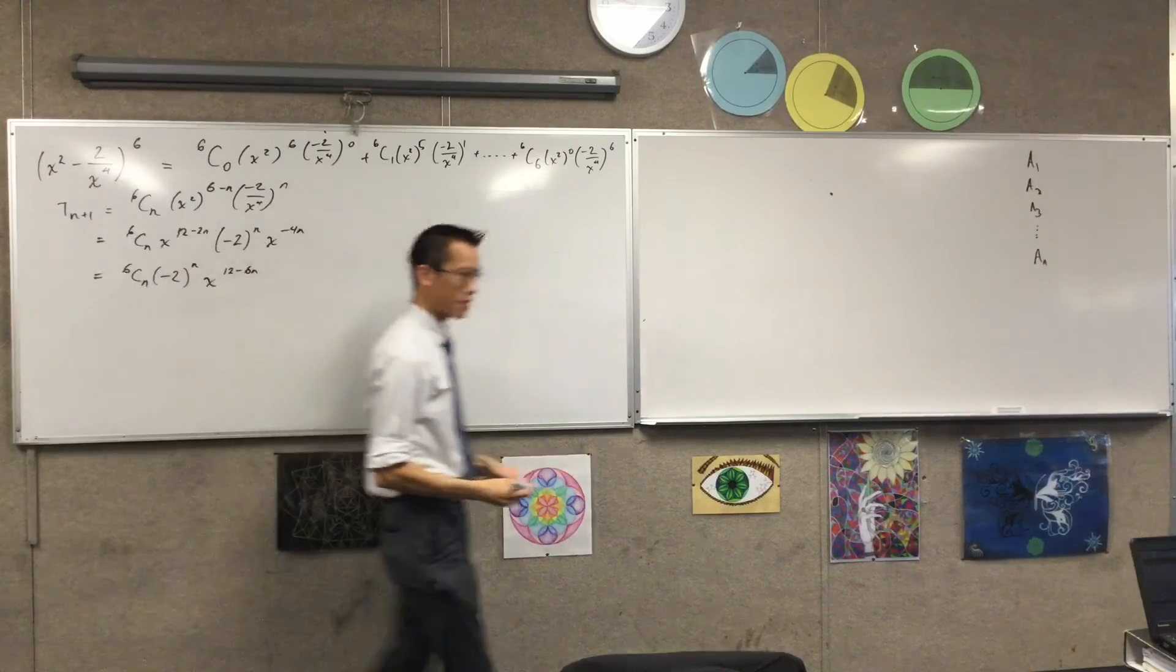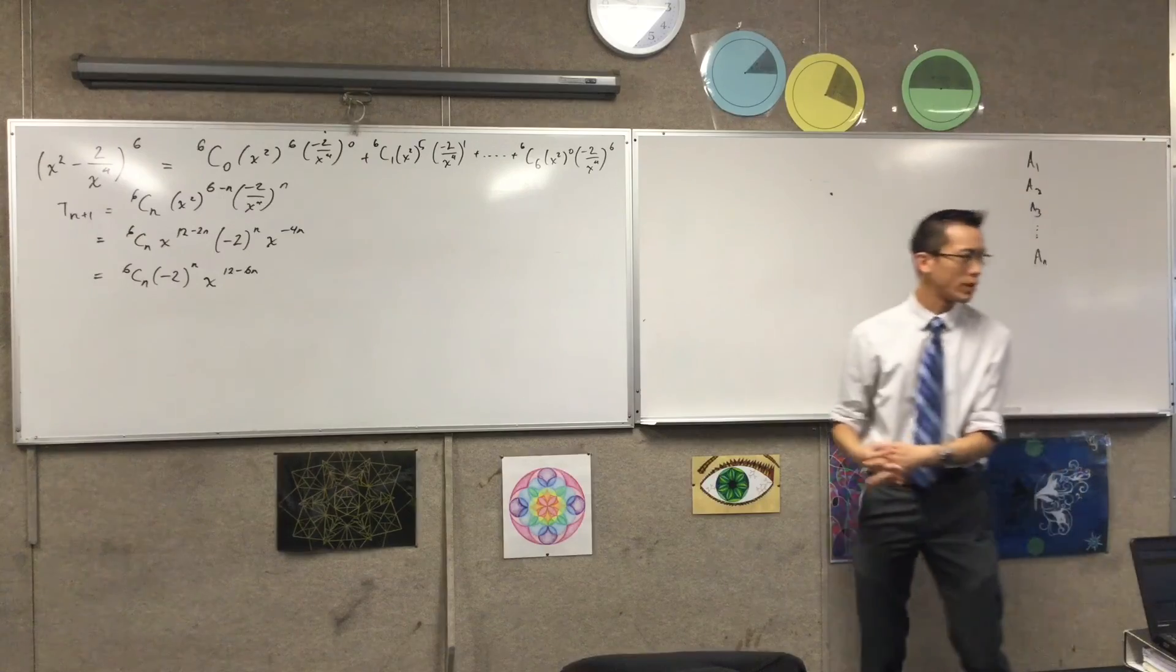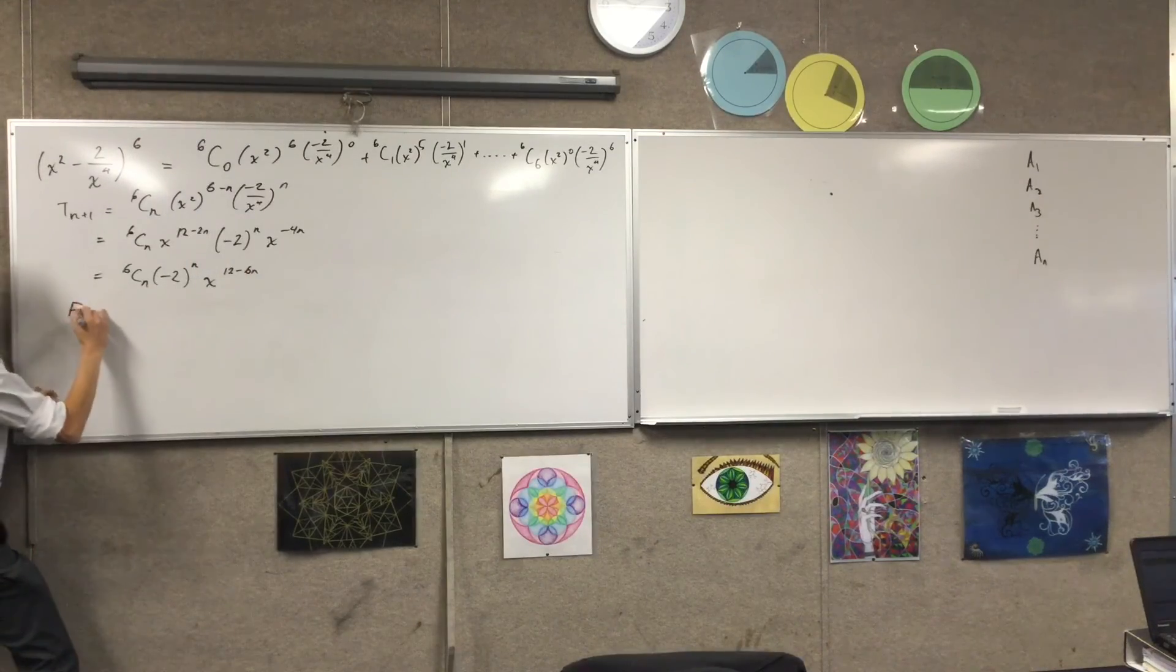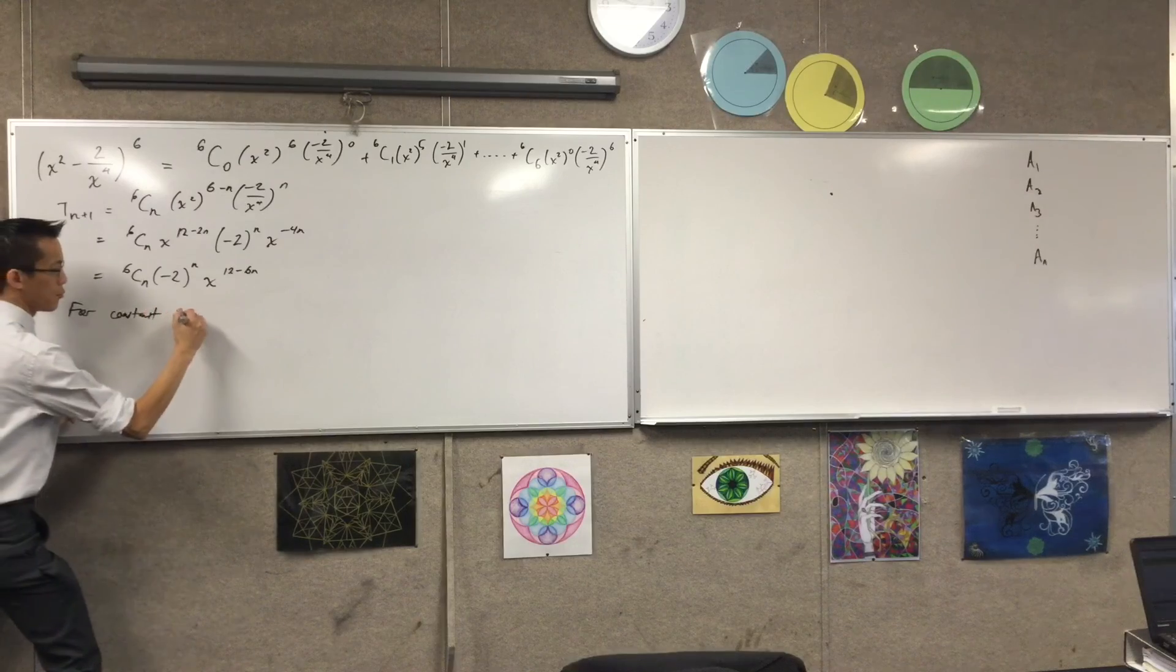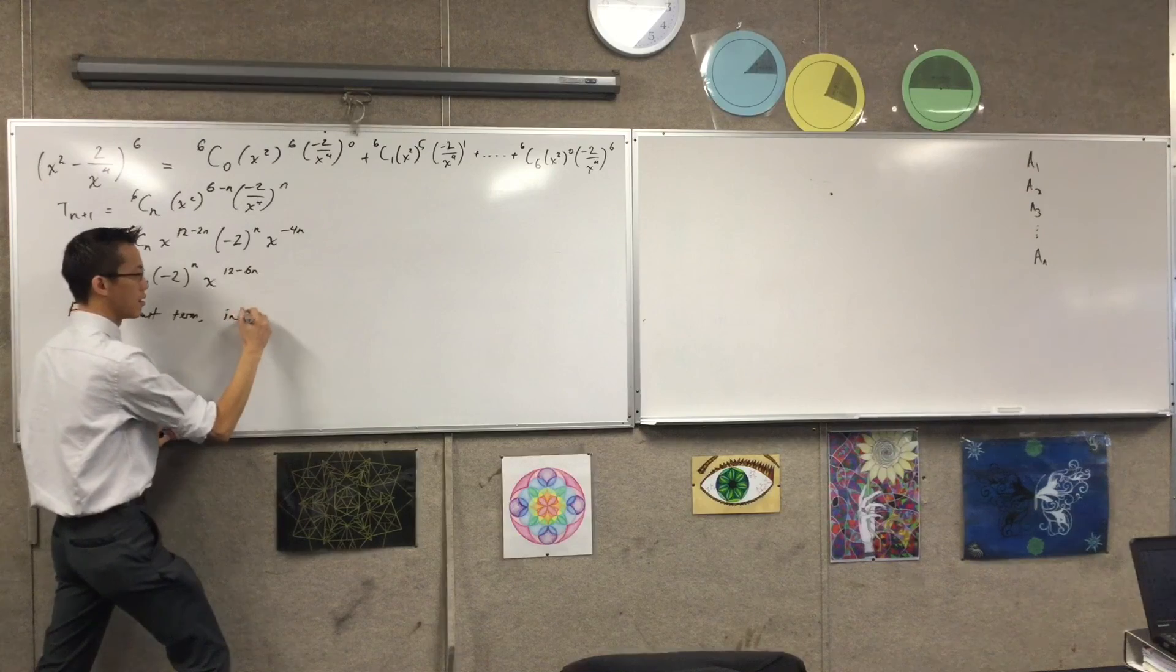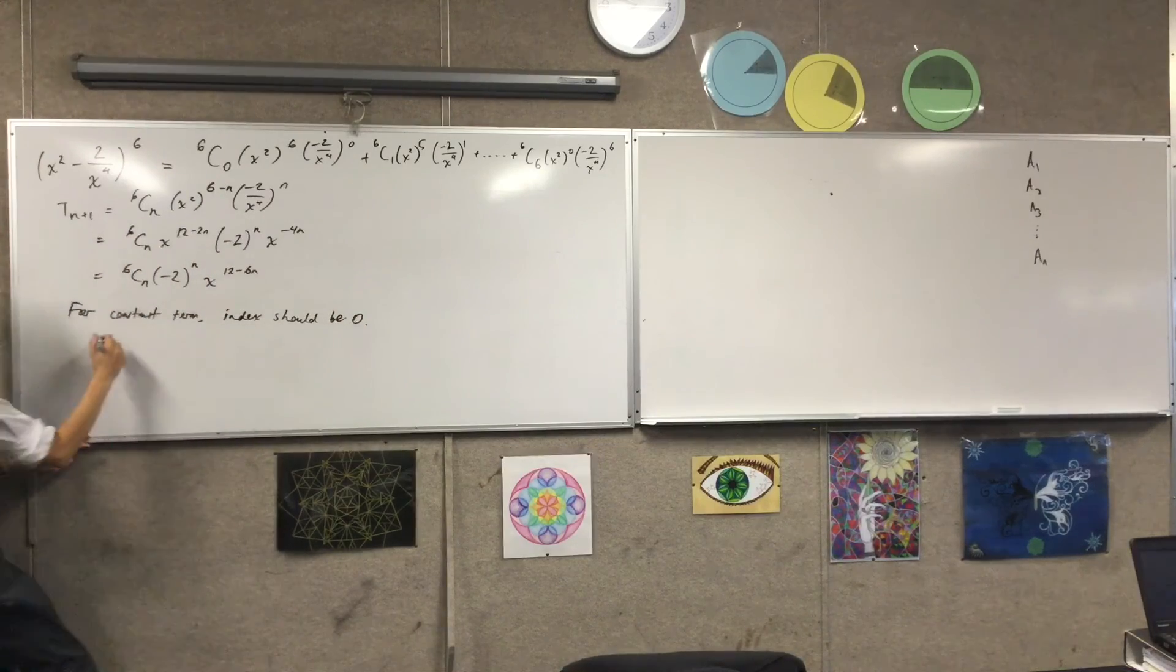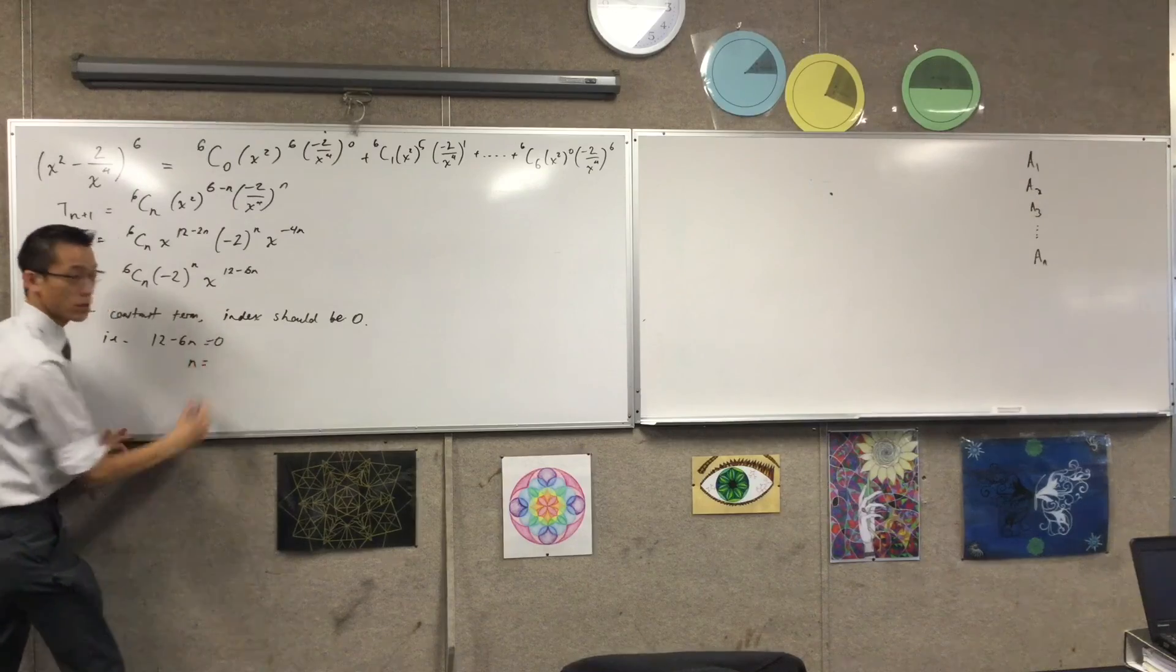So here you can now see the maths is starting to unfold. I do want to explain what I'm doing though because I'm not always trying to find the constant term. Sometimes I'm trying to do other things like find the greatest coefficient. I'm going to write for constant term or for the term that is independent of x, we want the index to be 0. Does that make sense? So in other words, 12 minus 6n equals 0. So n of course is equal to 2.